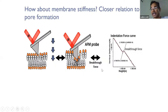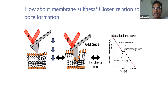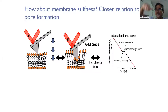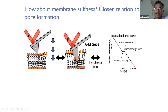Is that the only thing we can do to measure membrane order, or are there other measures? Do different measures agree? That's the whole point of this talk. We decided to measure membrane order in a different way: squish it, or try to puncture it. You come down with an AFM tip — an atomic force microscope tip — and try to puncture the membrane.